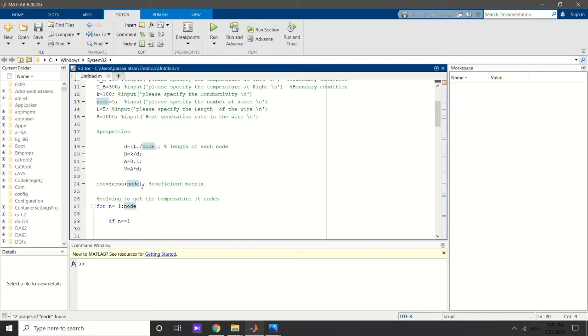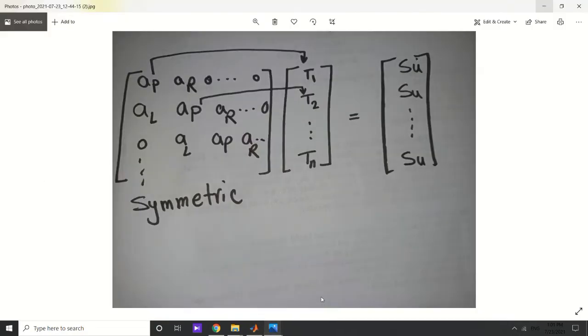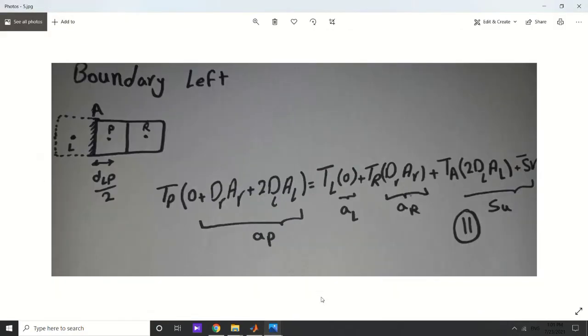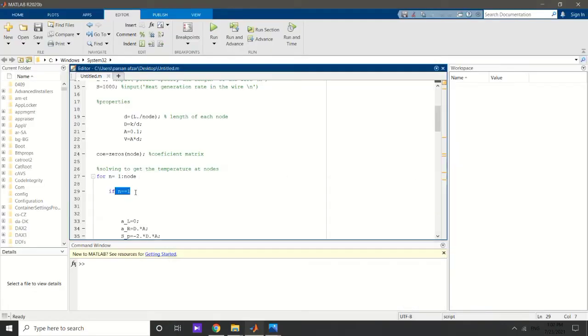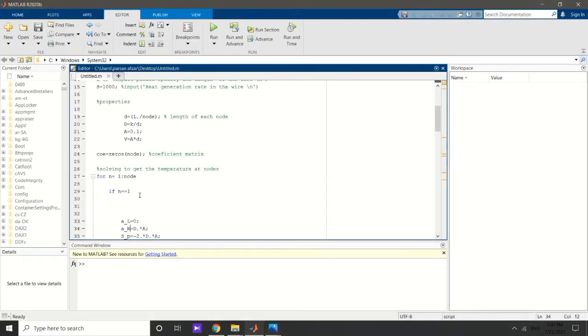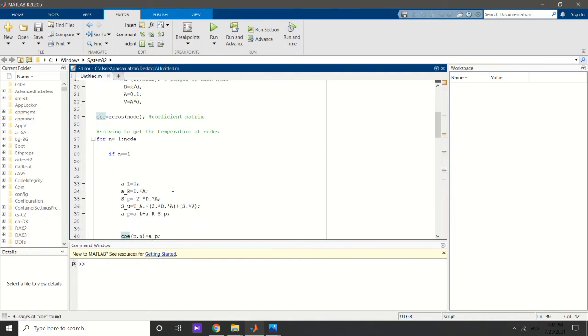For n changing from one to the number of nodes, if it is n equal to one, which means that it is the left boundary. When n equals one, n equals two and three.